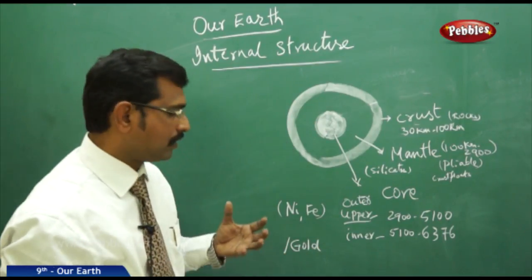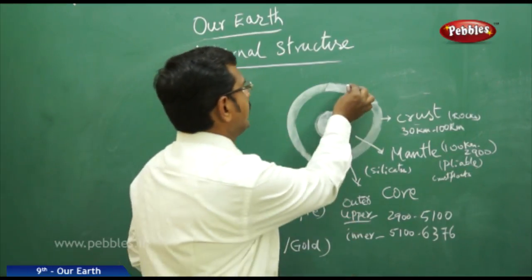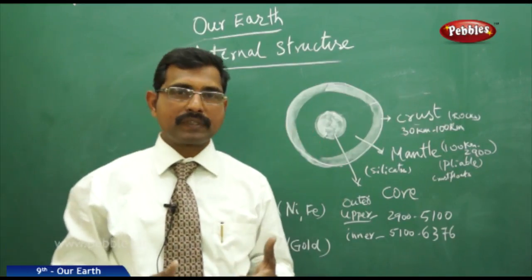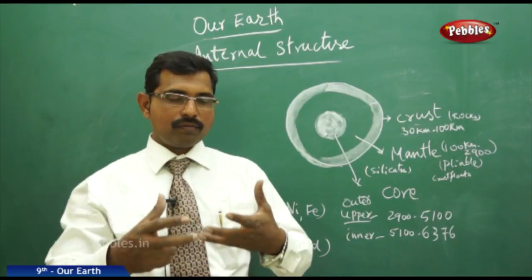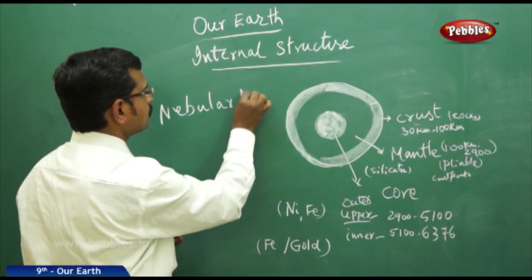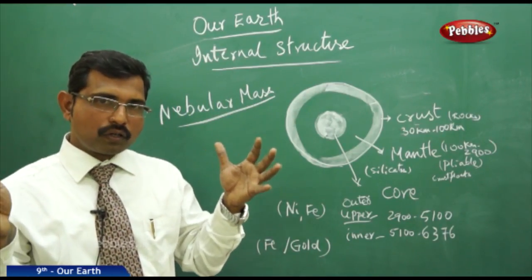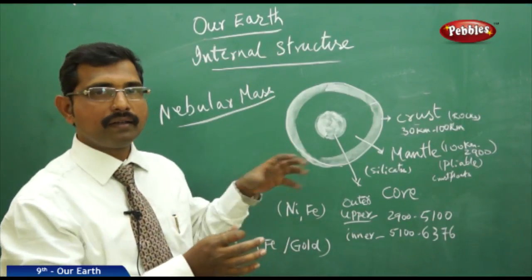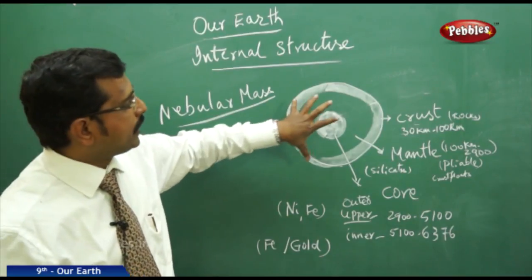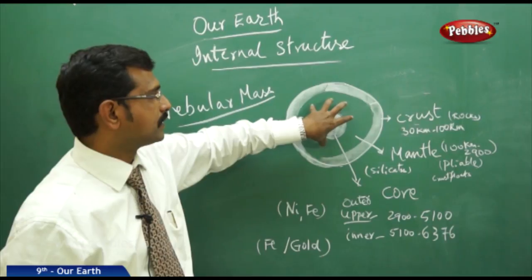The inner core is made of dense metals like iron, again in the molten condition. As we know, the earth formed billions of years ago in a molten and gaseous form, which we call nebula or nebular mass. After the cooling of this nebular mass, it became solid — just like milk when it cools down forms a relatively solid layer on top, while the inside remains hot and molten.